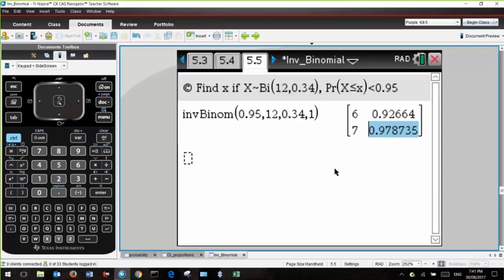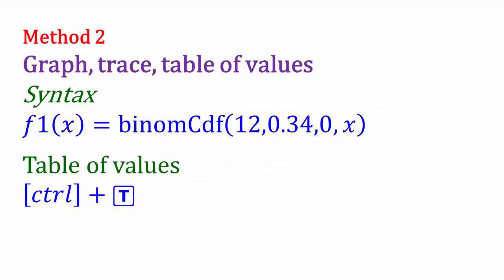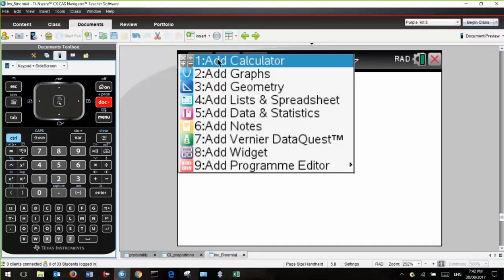Another method is we can use a graph, and then we can either use a table of values from the graph, or we can use the trace command. The syntax is very simple. We want F1 of X equals binomial CDF with N equal to 12, P equal to 0.34, with the lower limit 0, the upper limit X, and we want to see for which value of X is below 0.95. To get the table of values, it's control plus T. By the way, that syntax is fine for you to think about, but don't write that down for the examiners. The examiners don't want to see calculator syntax, not mathematical notation.